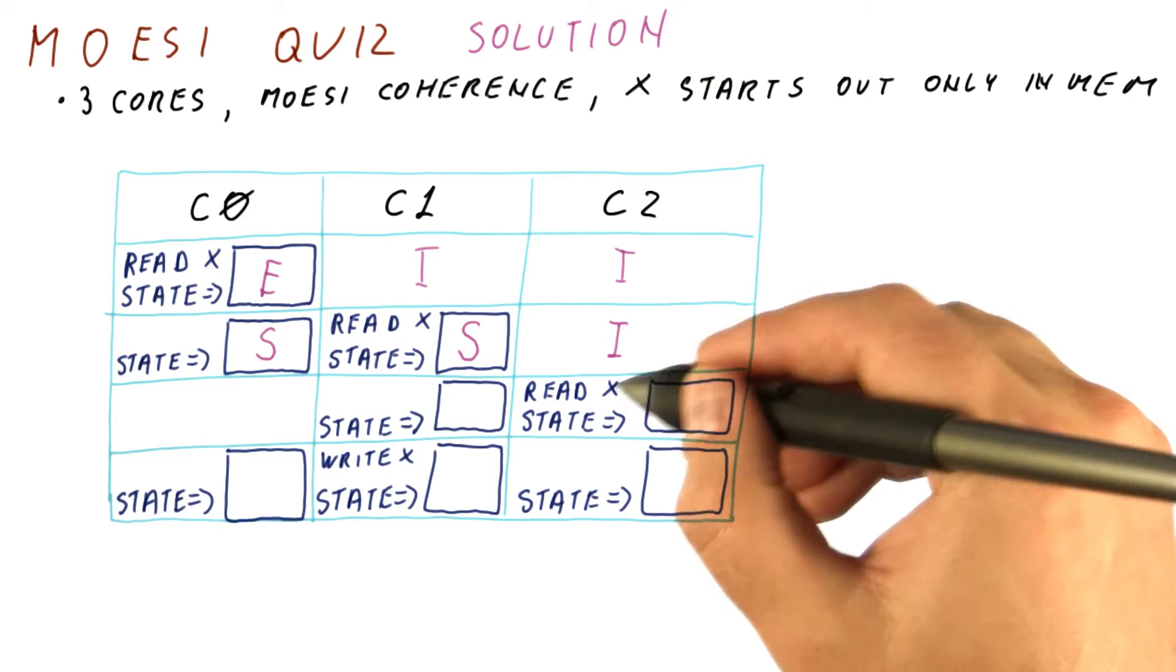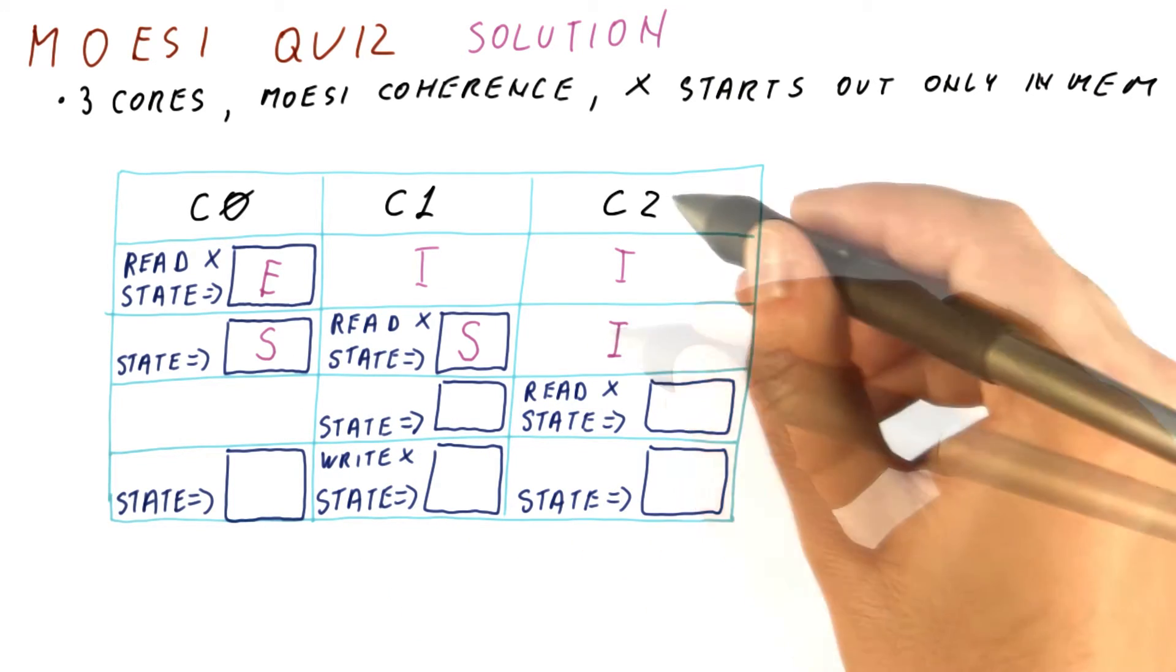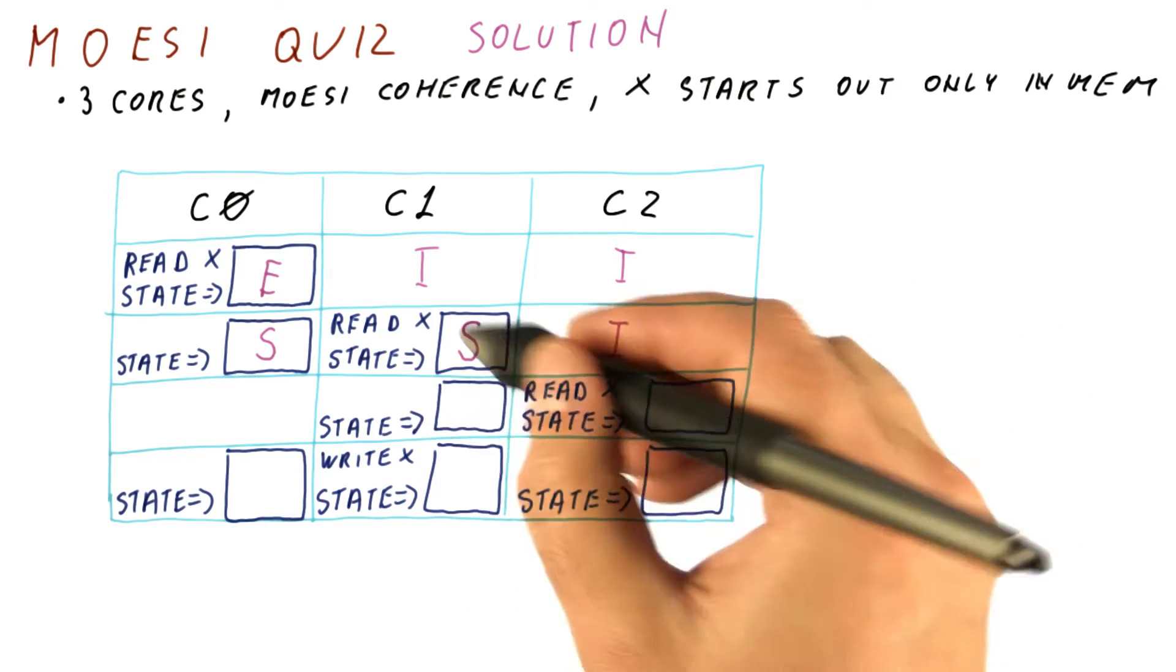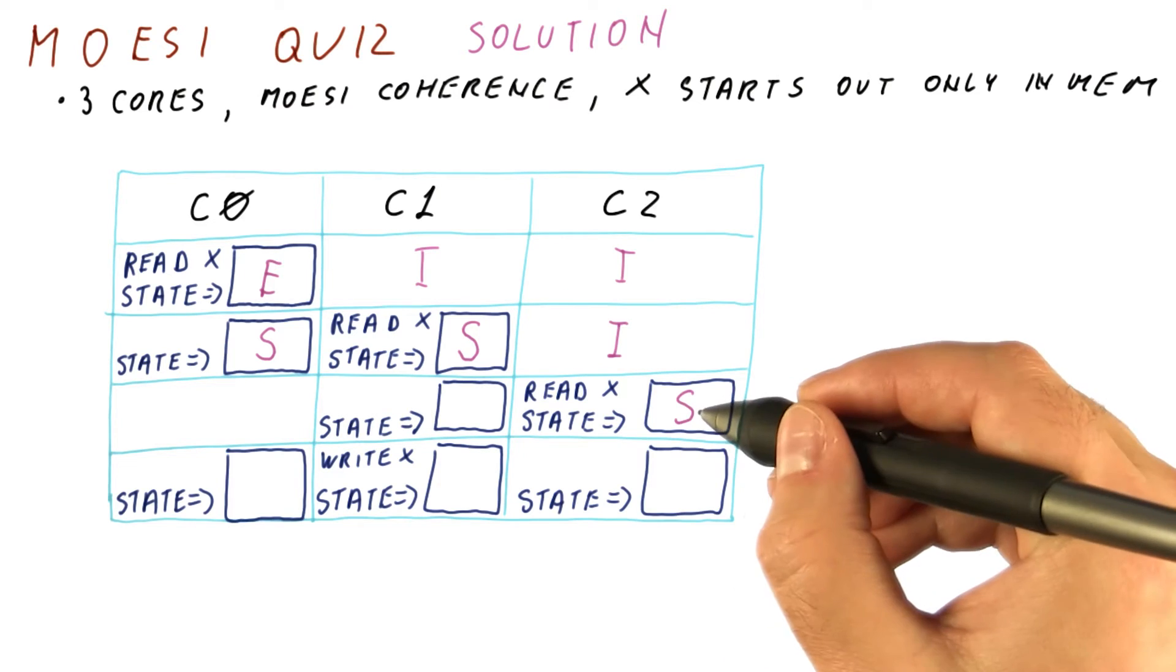C2 still has the invalid state for its block. When C2 reads, it also detects that there are two other sharers, so it gets the block in the shared state.